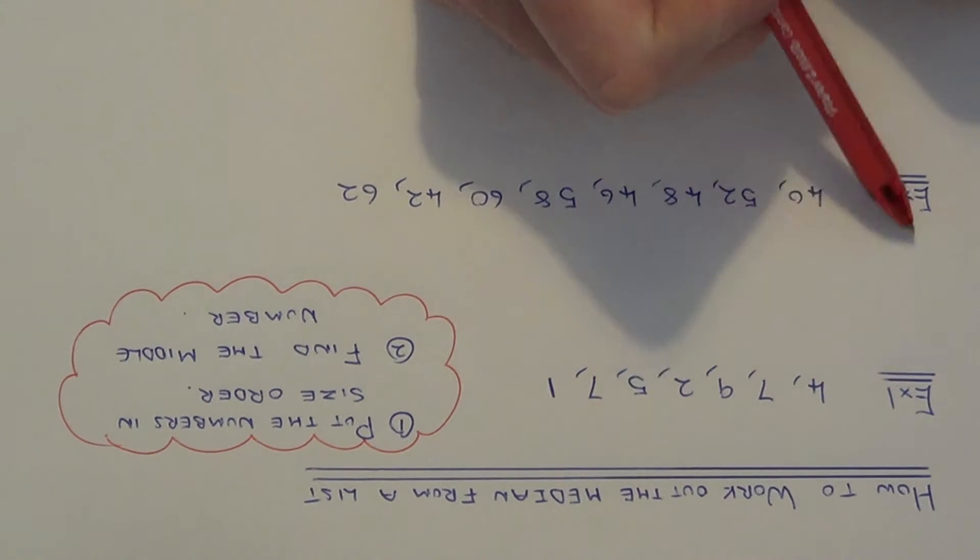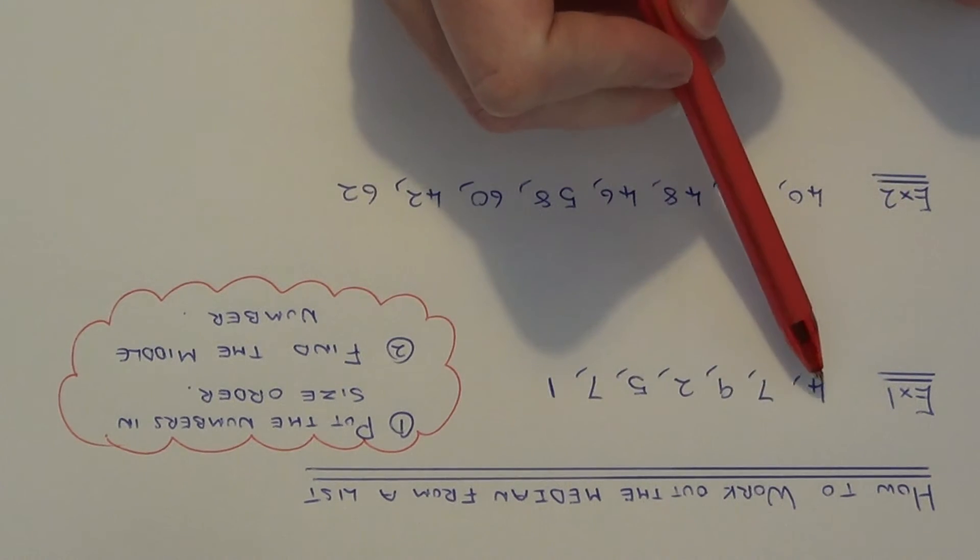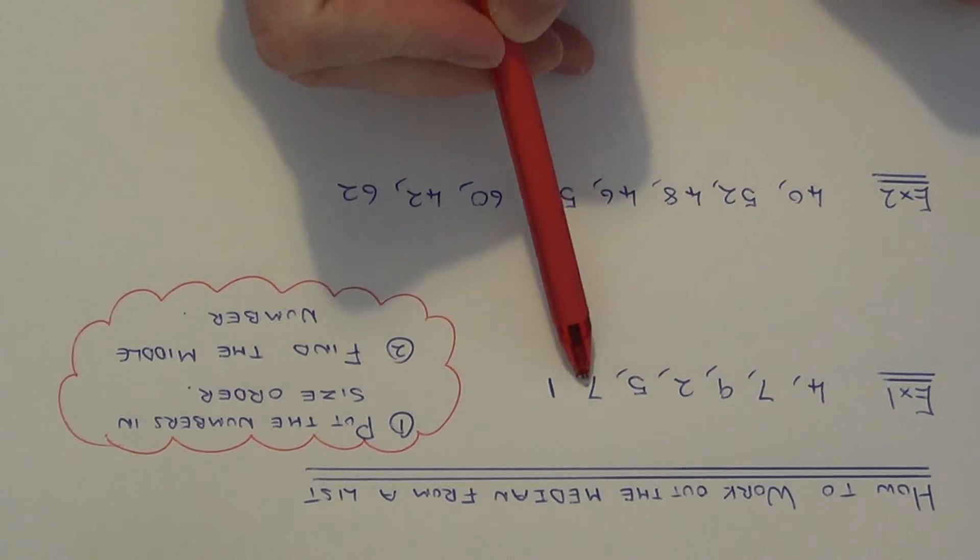So let's have a look at our two examples. So example one. We've got the numbers four, seven, nine, two, five, seven and one.